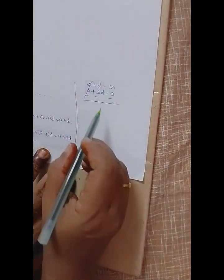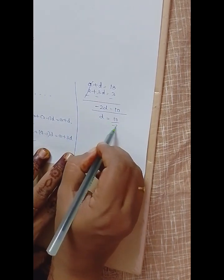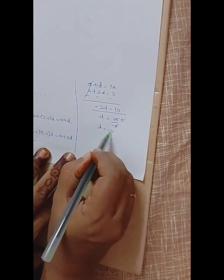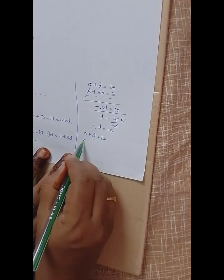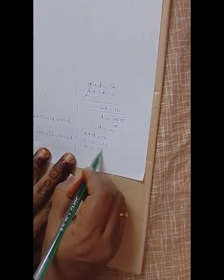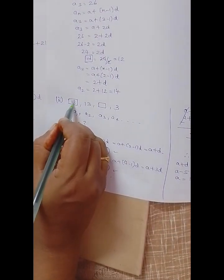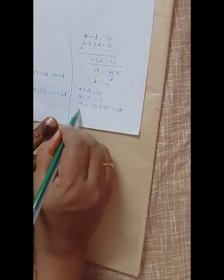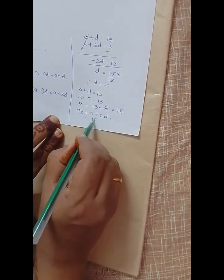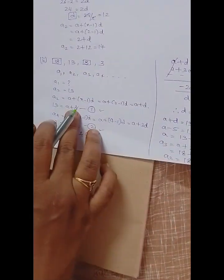Solving: a + d = 13 and a + 3d = 3. Subtracting, a cancels: d - 3d = -2d, and 13 - 3 = 10, so d = 10 / (-2) = -5. Substituting d = -5 into equation 1: a + (-5) = 13, so a = 13 + 5 = 18. Now a3 = a + 2d = 18 + 2(-5) = 18 - 10 = 8.